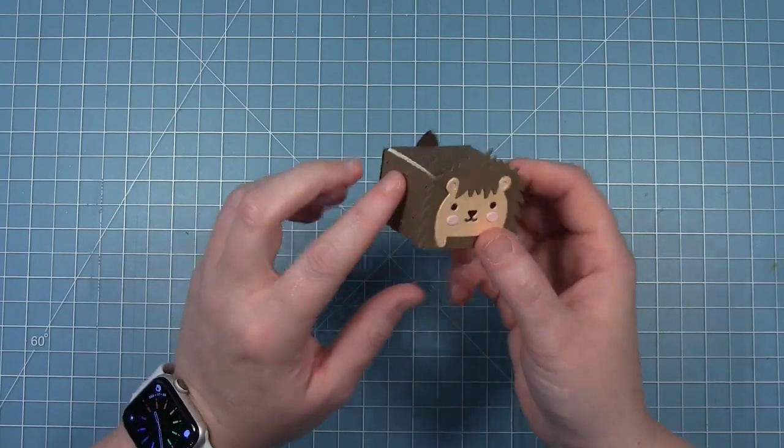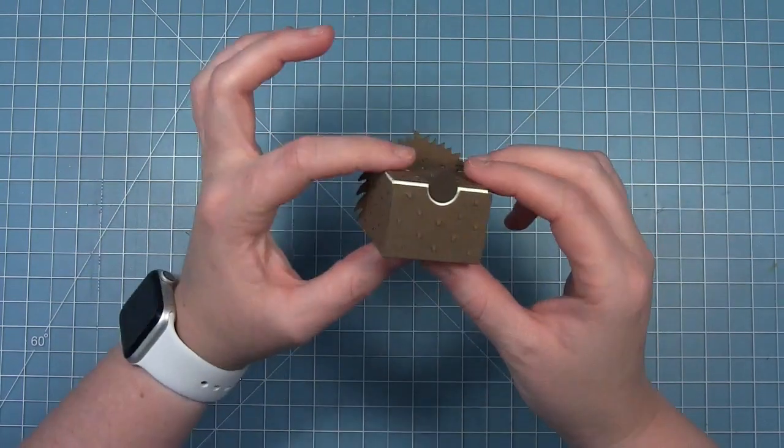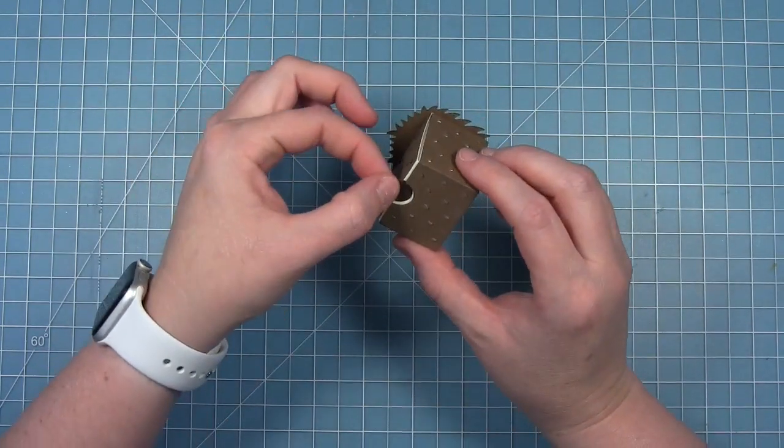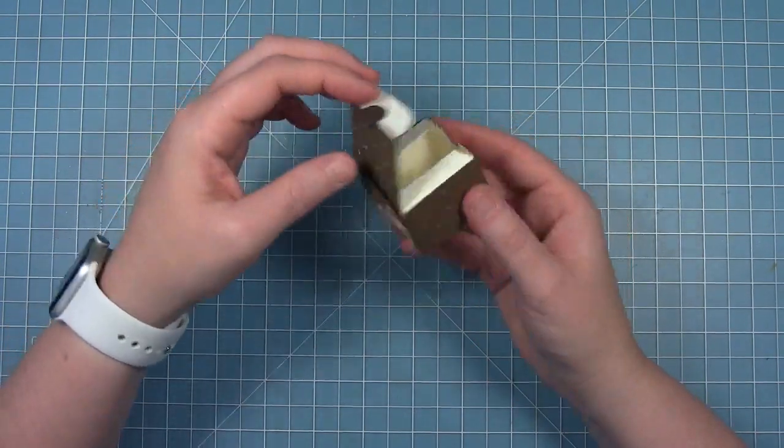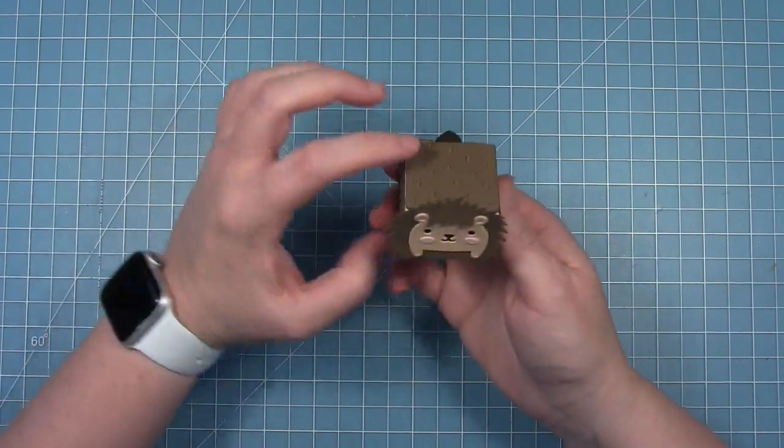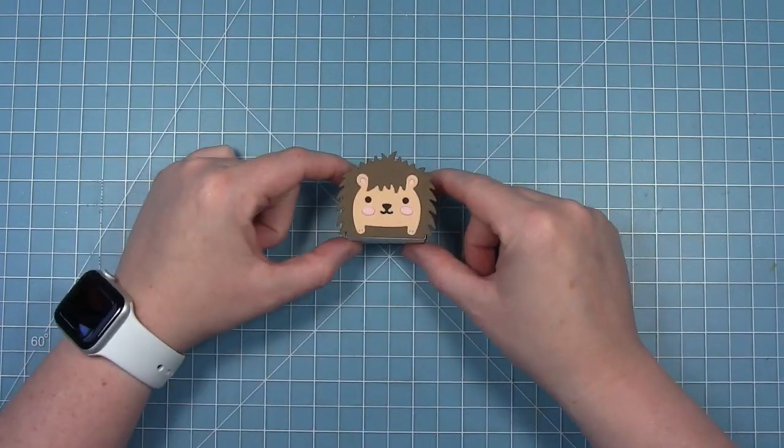He's super easy to put together and I think it would be so cute in lots of rainbow colors for a party or something. You can just open it up right where his tail is and put a treat inside. Super cute.